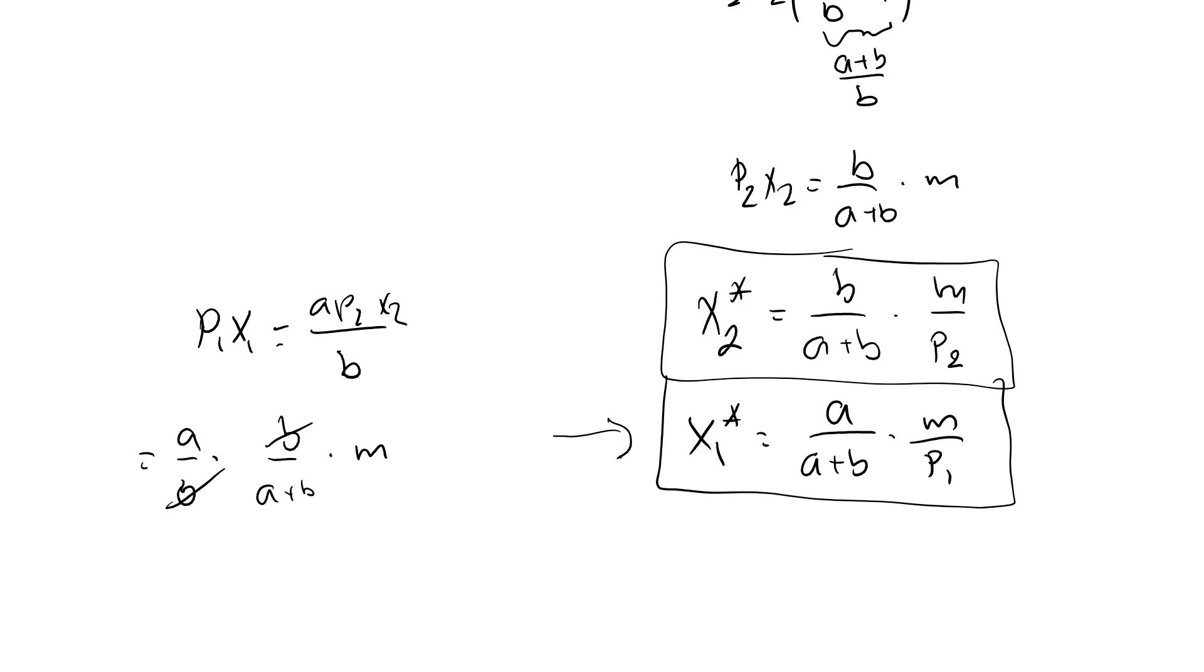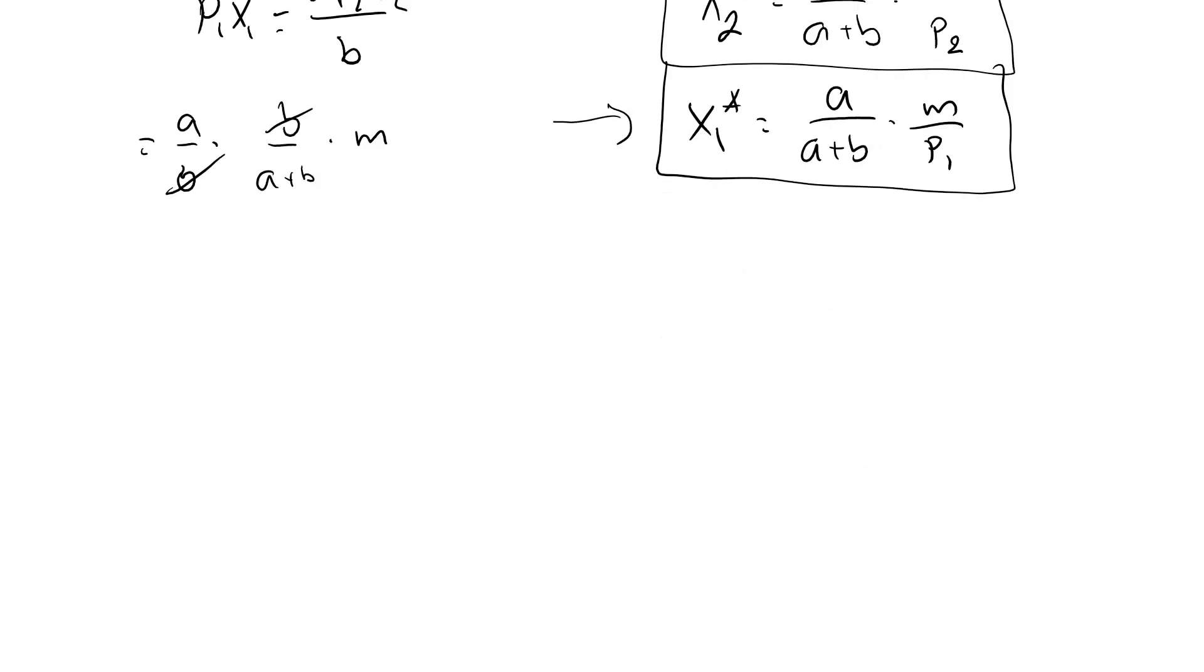Let's just quickly see how you would get the same result if you did it through the Lagrangian. So l, x1, x2 is x1 to the a, x2 to the b, minus lambda, p1, x1 plus p2x2 minus m. Partial l, partial x1 is ax1 a minus 1, x2 to the b, minus, we have an x1 here, so lambda p1 equal to 0.